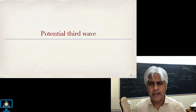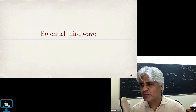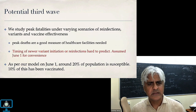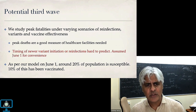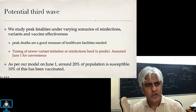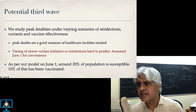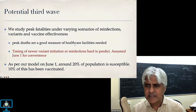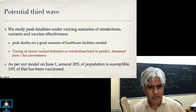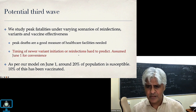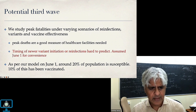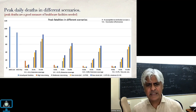We were clear that by this time one can't use this model to make projections anymore — there's too much we don't know. For the potential third wave, in June-July, we did an extensive scenario analysis to guide policy rather than project a specific scenario. We studied peak fatalities under varying scenarios of reinfections, variants, and vaccine effectiveness, since peak deaths are a good measure of healthcare facilities needed. As of June 1st, 2021, about 20% of population was susceptible and 10% had been vaccinated.